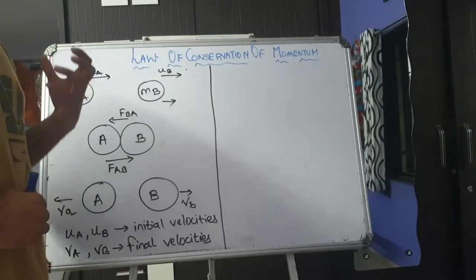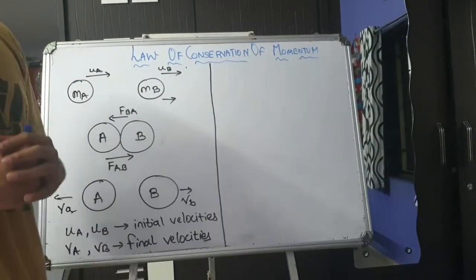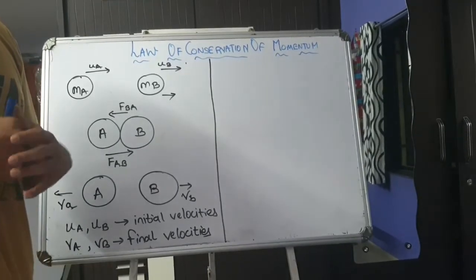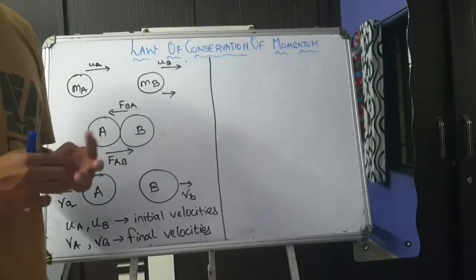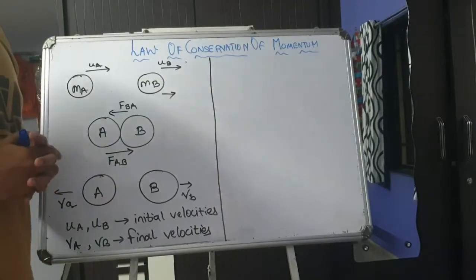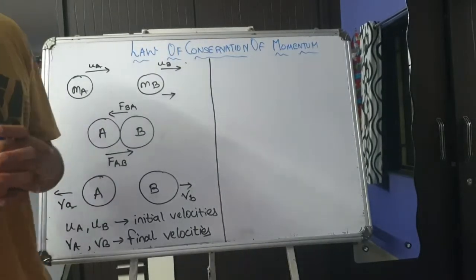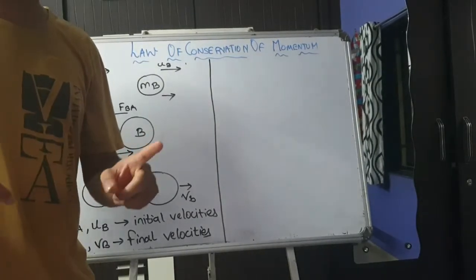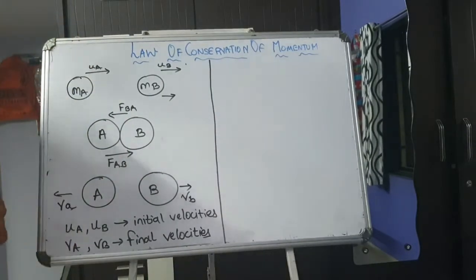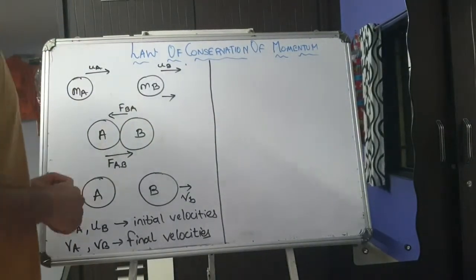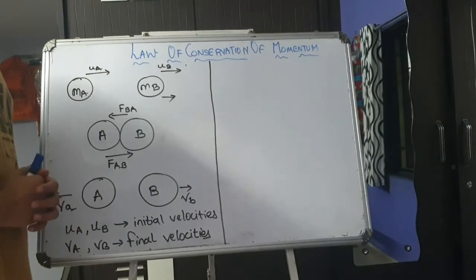This law of conservation of momentum is derived or stated through Newton's third law of motion. What was Newton's third law of motion? It was that action and reaction are equal and opposite. So let's try to derive this law of conservation of momentum.